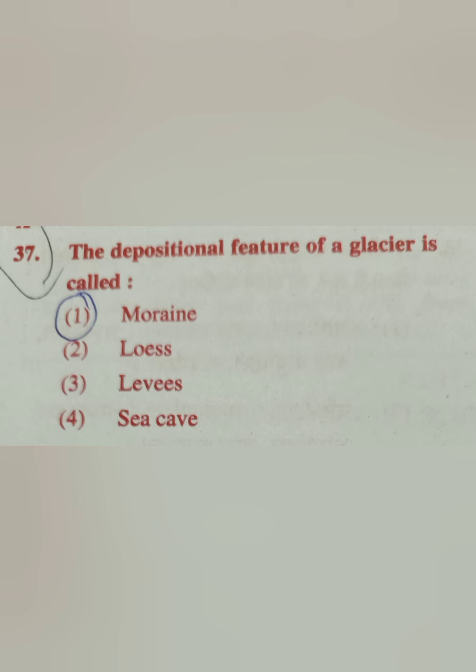Question 37: The depositional feature of a glacier is called — Moraine, Loess, Levee, or Sea Cave? We call it moraine. Option number 1 is correct. Question 38: Statements A and B describe features of which vegetation? Option A: This vegetation is found in higher latitudes, 50 to 70 degrees of the northern hemisphere. Option B: It is also called taiga.